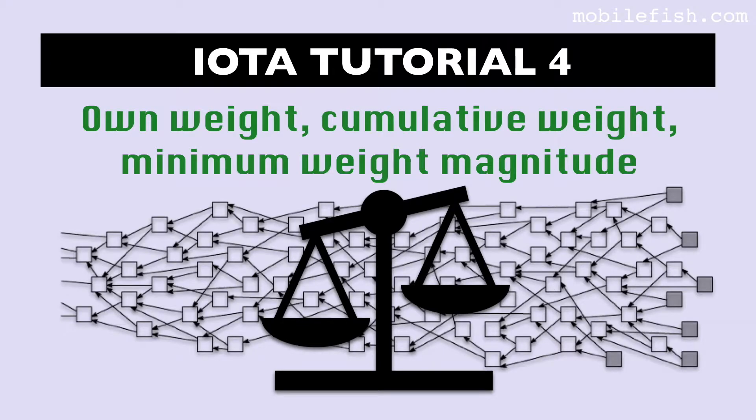In IOTA the word weight can be used in different ways. You have own weight, cumulative weight, and minimum weight magnitude. In this video I will explain what these three words mean.